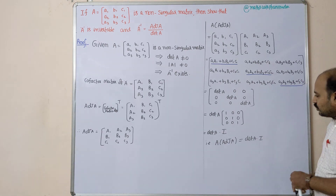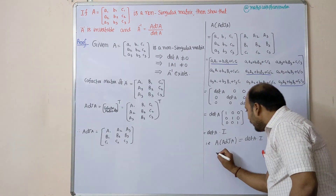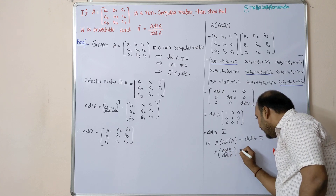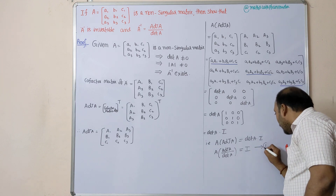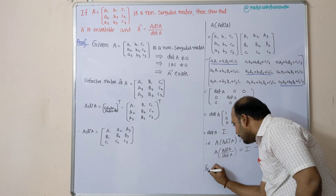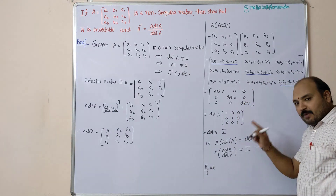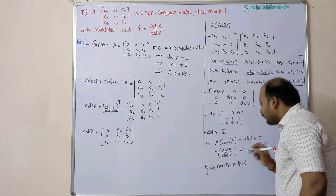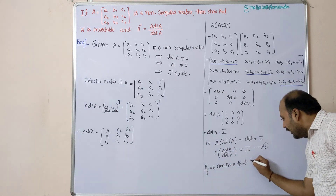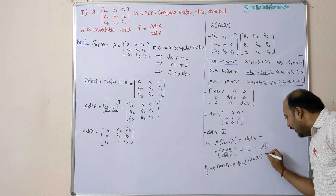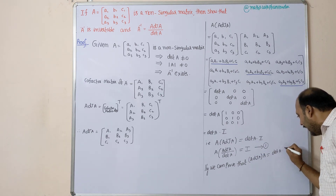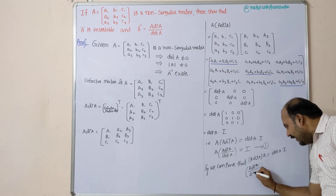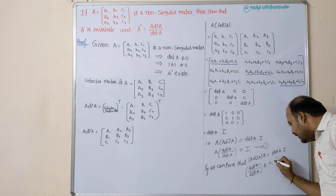From this, making I the subject: A × adjoint A divided by det A equals I — this is Equation 1. Similarly, we can prove that adjoint A × A also equals det A × I, which gives adjoint A divided by det A, times A, equals I — this is Equation 2. Most students don't write this step — you need to write it compulsorily.